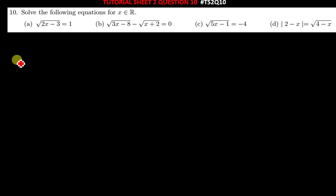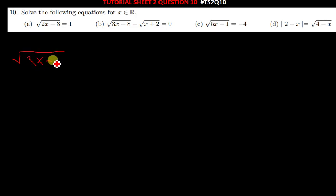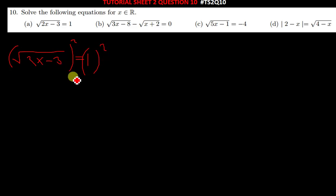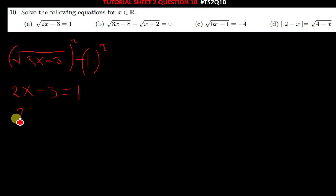We start with part (a). The question says: solve the following equation for x, where x is a member of the real numbers. We have the square root of 2x minus 3 being equal to 1. This one is simple — you just square both sides.